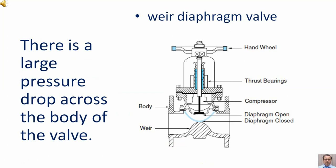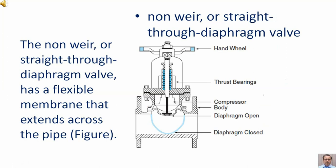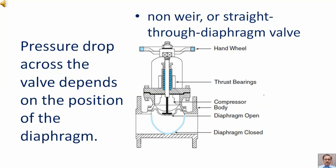There is a large pressure drop across the body of the weir valve, and it uses thick, durable diaphragm materials. The non-weir, or straight-through, diaphragm valve has a flexible membrane that extends across the pipe. The pressure drop across this valve depends on the position of the valve.